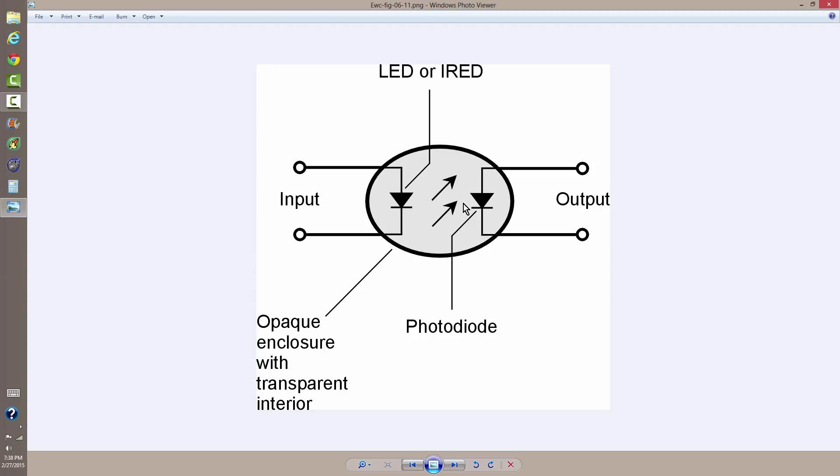Optical isolators look a little bit like integrated circuits. They have an opaque enclosure, but the interior is transparent to allow the infrared or visible light to pass from the light-emitting diode or infrared-emitting diode to the photodiode.